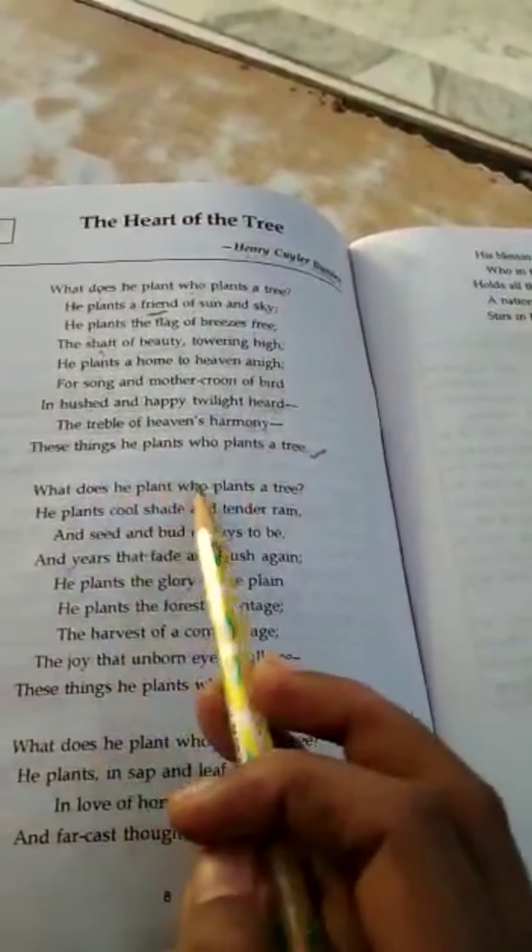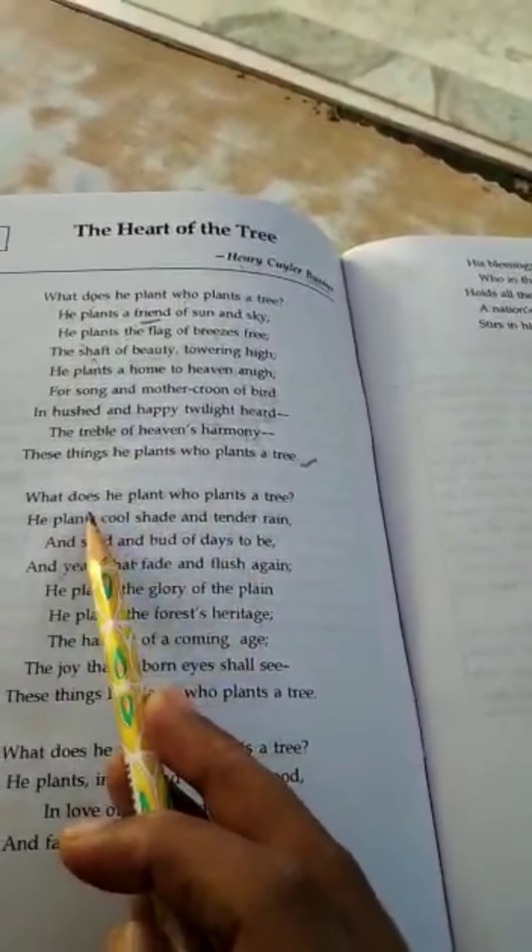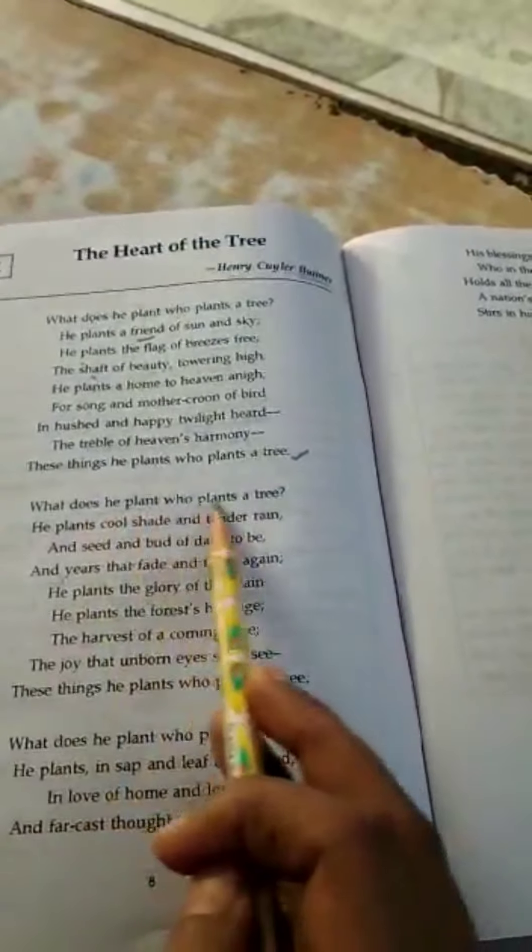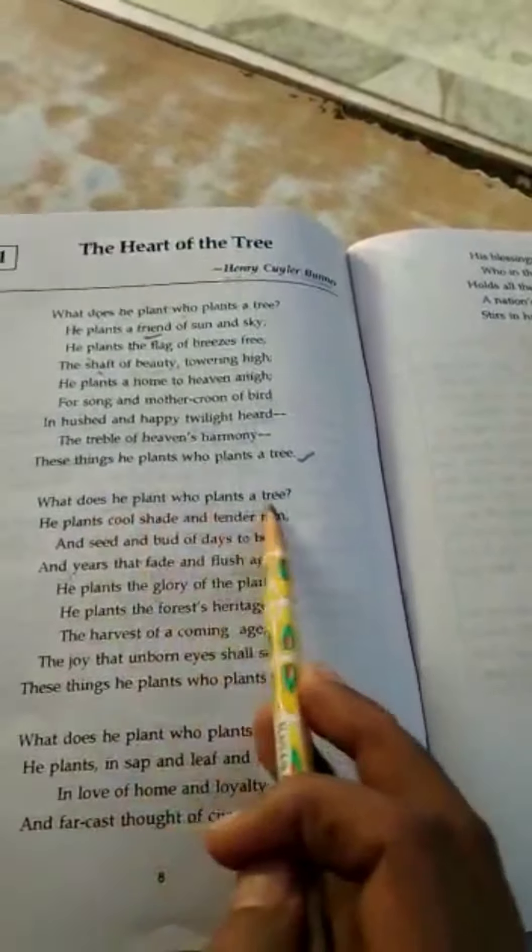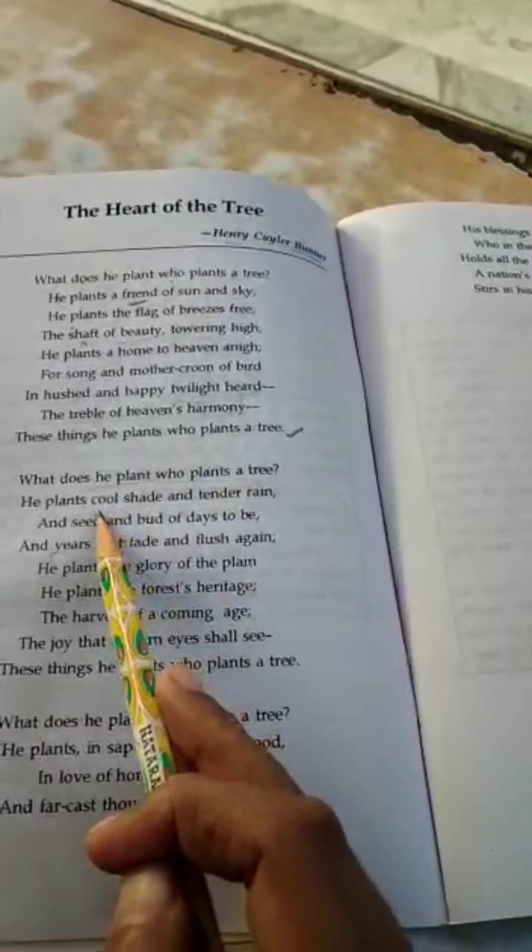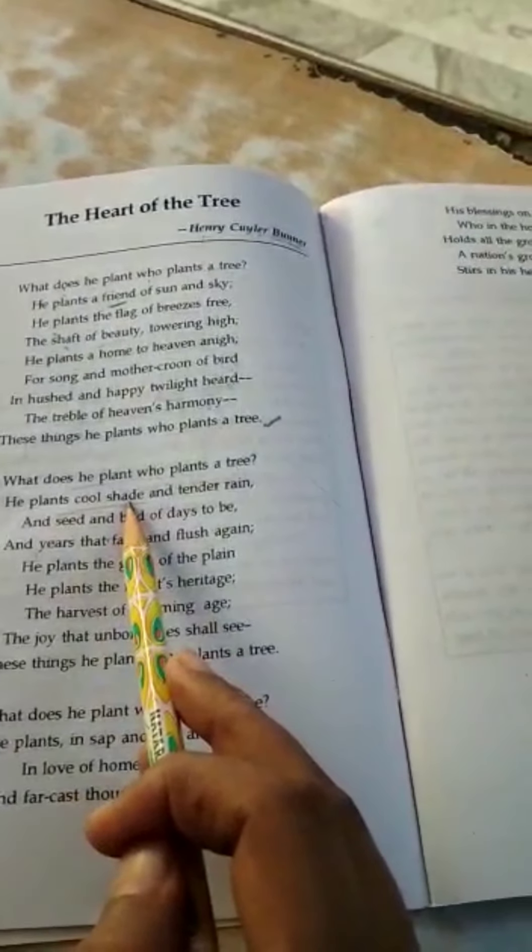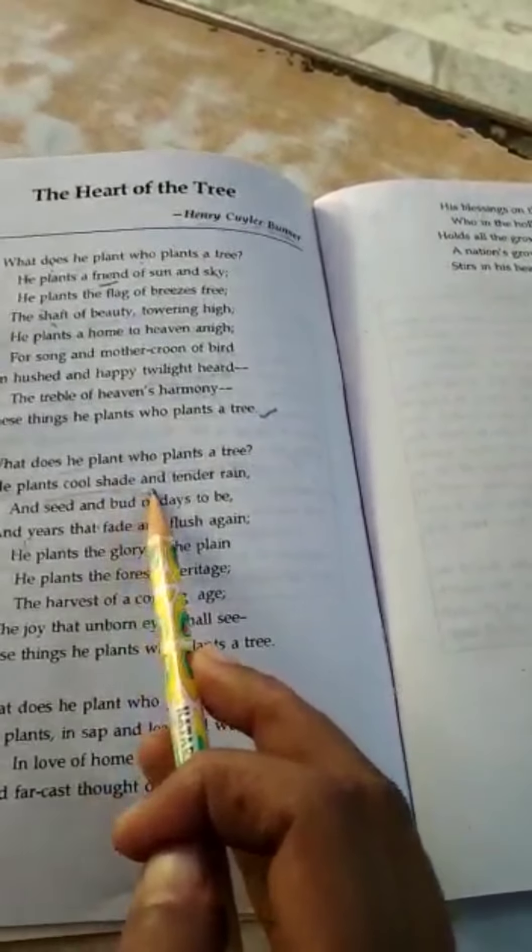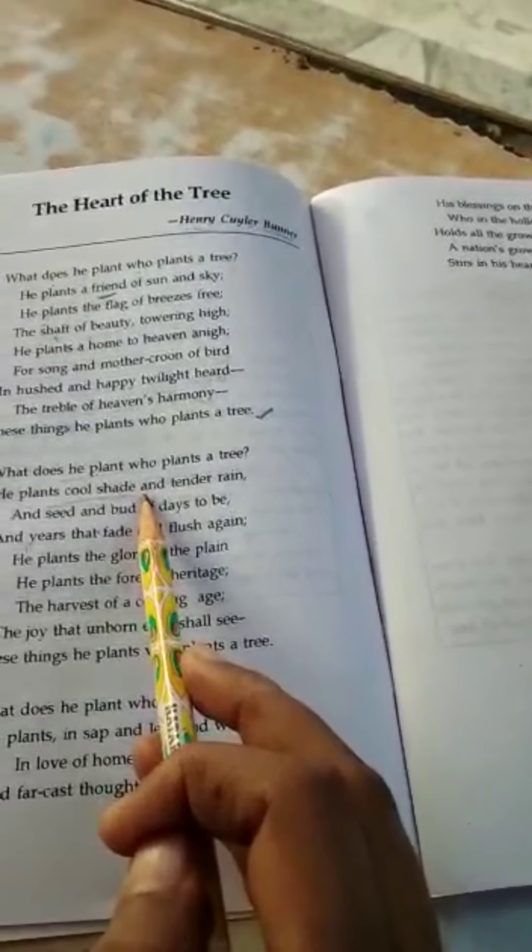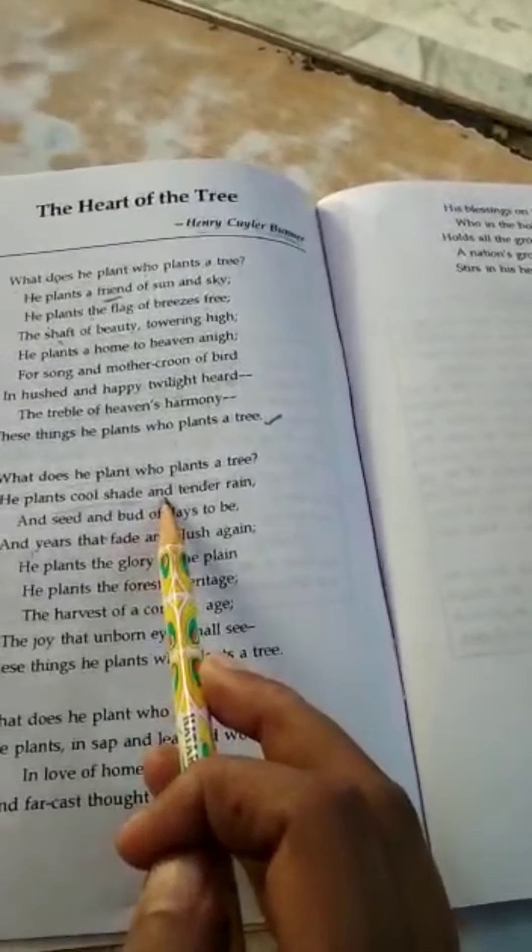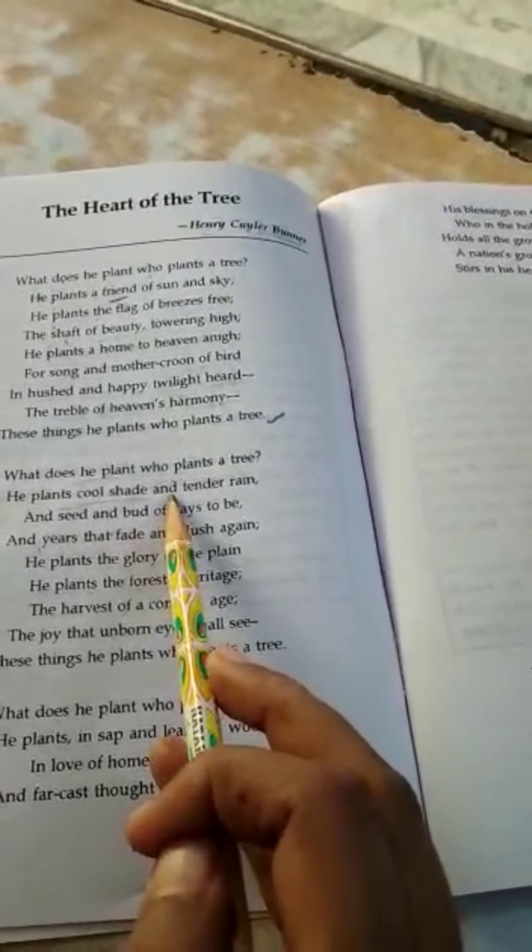In the second stanza, the poet puts the same question and asks the readers, what does he plant? Who plants a tree? A person who plants a tree, what does he do in real sense? Then the poet himself suggests the answer that he plants cool shade. Cool means soothing, which seems to be very pleasant to the body. He plants cool shade and tender rain, soft rain. And seed and bird of days to be. He just arranges the seeds and the birds for the time to come. And years that fade and flush again.